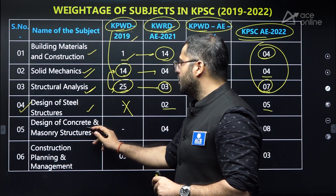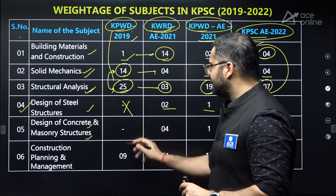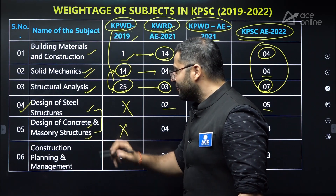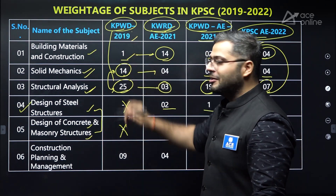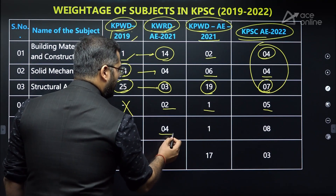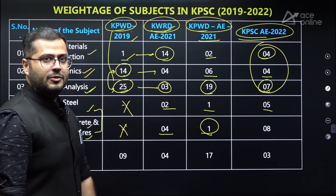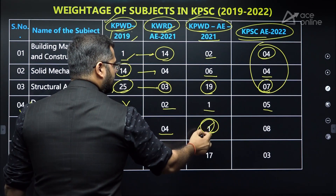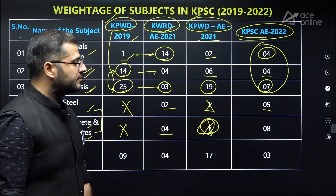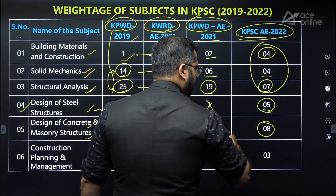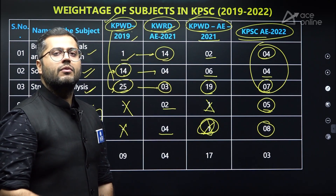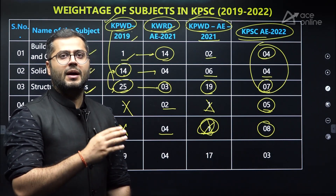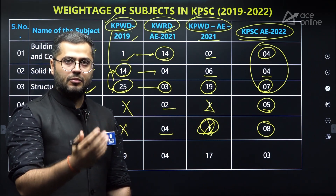After that comes design of concrete and masonry structures. Again, no question was asked in the KPWD examination — which is very surprising, as these two are among the most important subjects. We also see very few numbers in KWRD and KPWD 2021. It's quite clear from KPWD history that steel structures and RCC are both of very low weightage. But in KPSCA, good weightage has been given. It's up to you whether to prepare both these subjects, but I would prepare them after completing the more important subjects first.